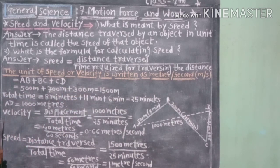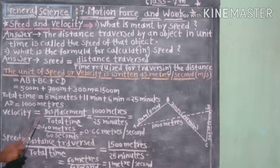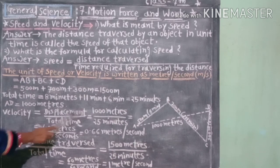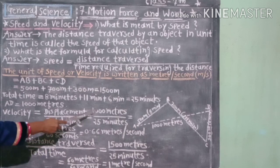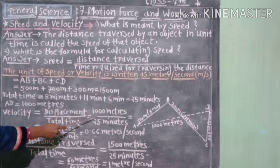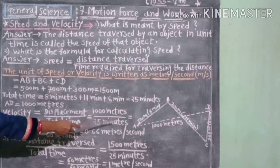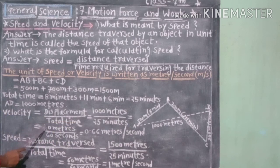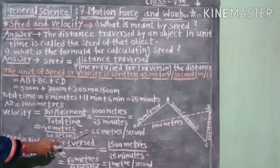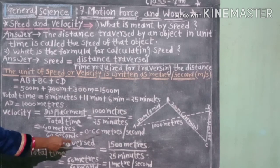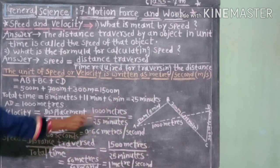Ranjit's velocity when going from home to school: Velocity is equal to displacement upon total time, equal to 1,000 meters upon 25 minutes, equal to 40 meters upon 60 seconds, equal to 0.66 meters per second.